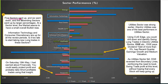This week five sectors went up and six went down, but the ascending sectors went up by larger percentages. Therefore at a sector level the market seems to have a small overall bullish bias — the red bars are larger on the positive side than on the negative side. Information Technology and Consumer Discretionary are up for all three review periods. Information Technology has all three bars to the right of the zero line, and the same is true for Consumer Discretionary. That means these sectors are going up for at least one month.